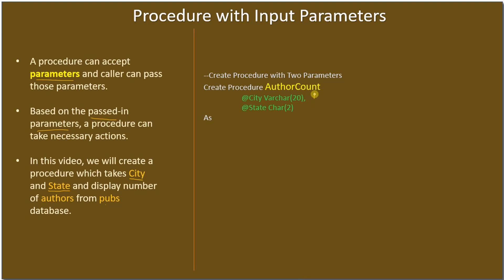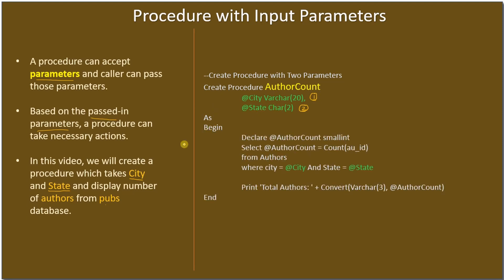The procedure name is author_count and it takes two parameters: one is city and the other one is state. In the procedure body we declare a variable called author_count as our local variable. We set this variable using a SELECT statement — SELECT author_count equals the COUNT of author_id from the authors table WHERE city equals the input parameter city.